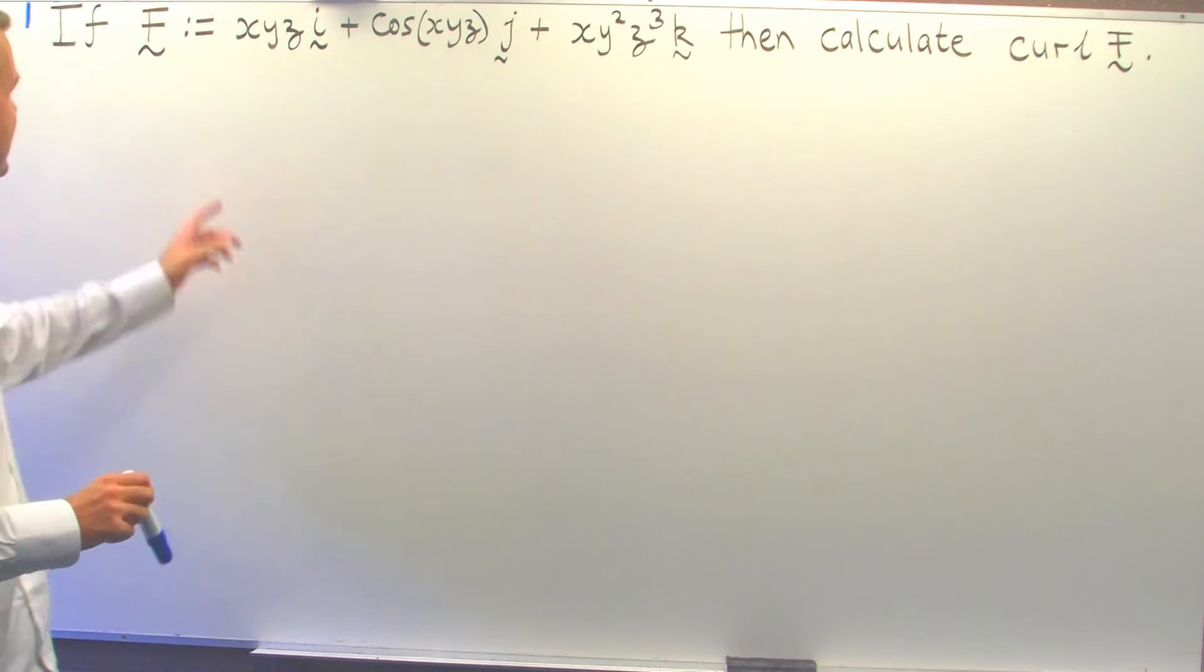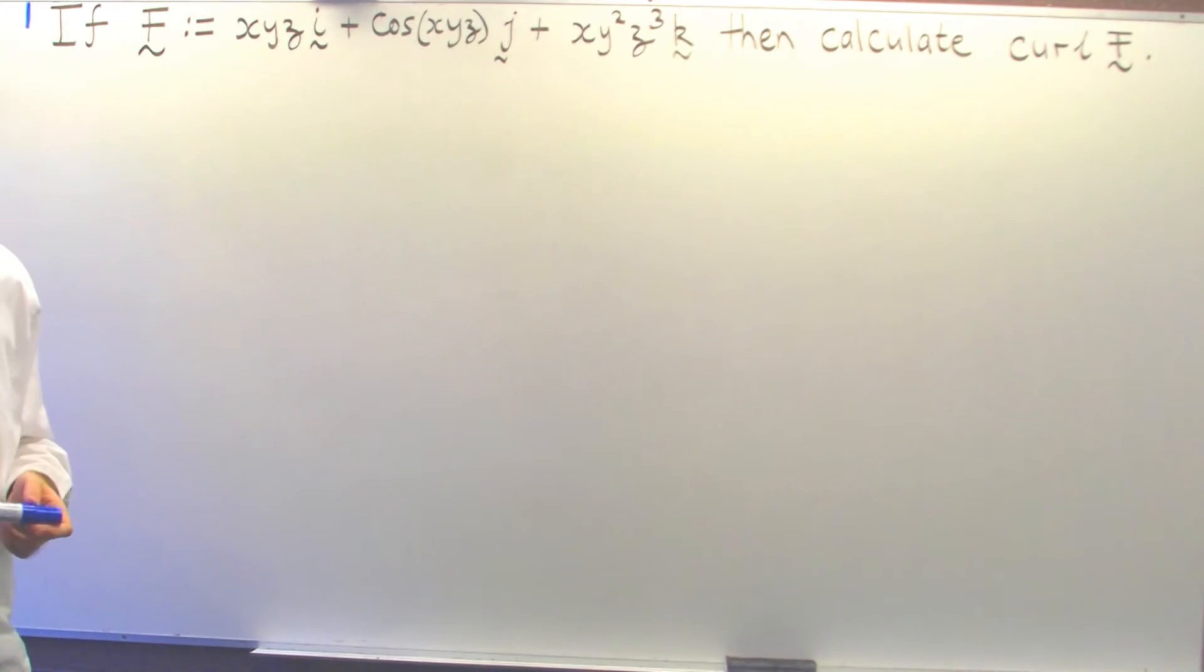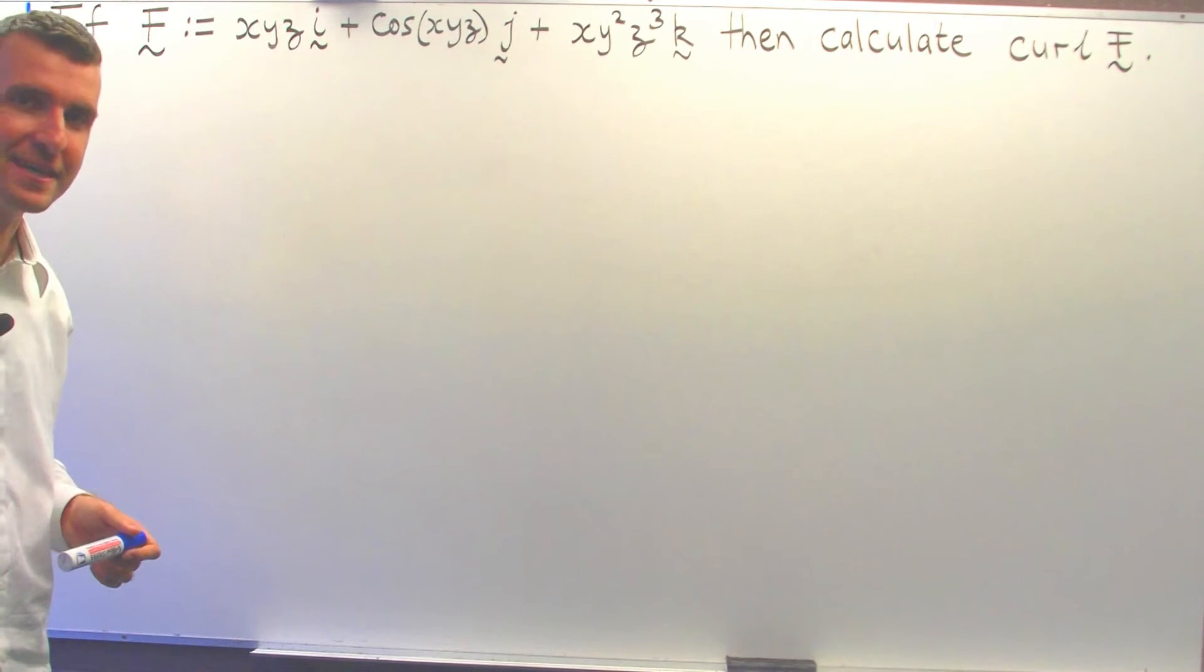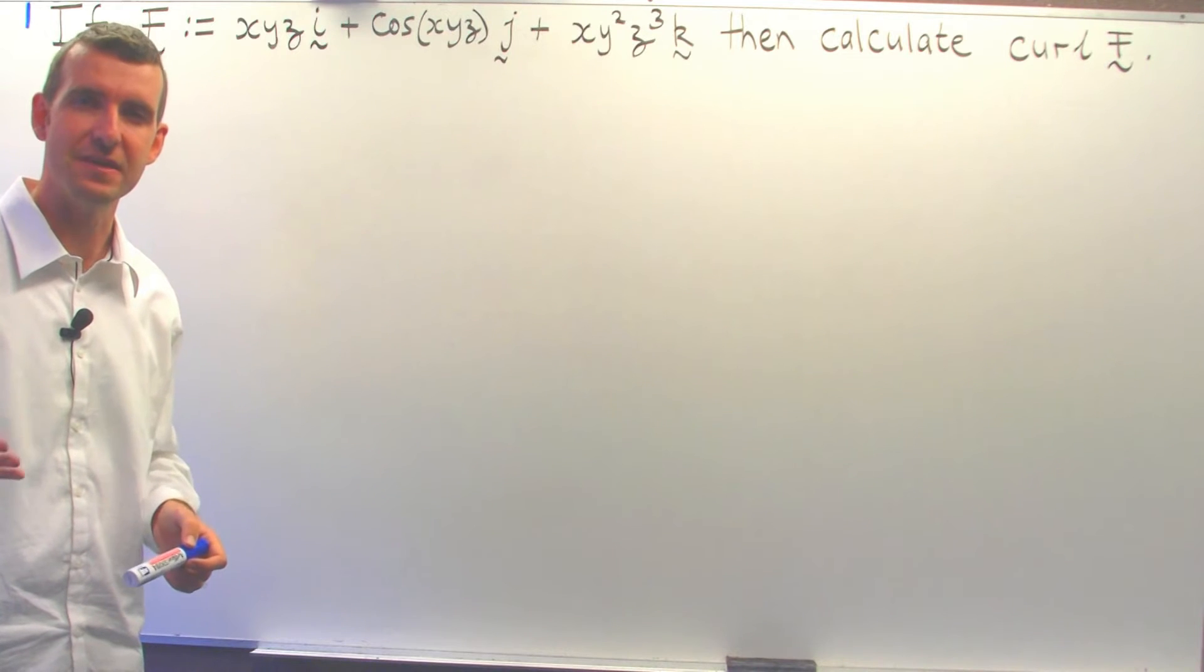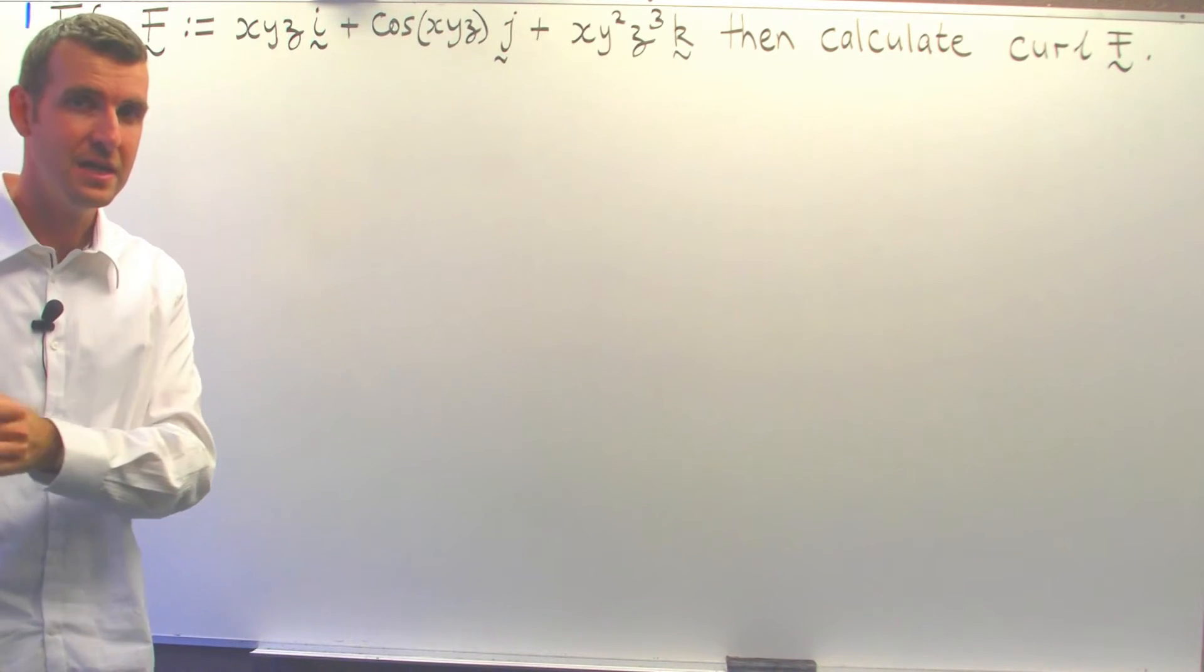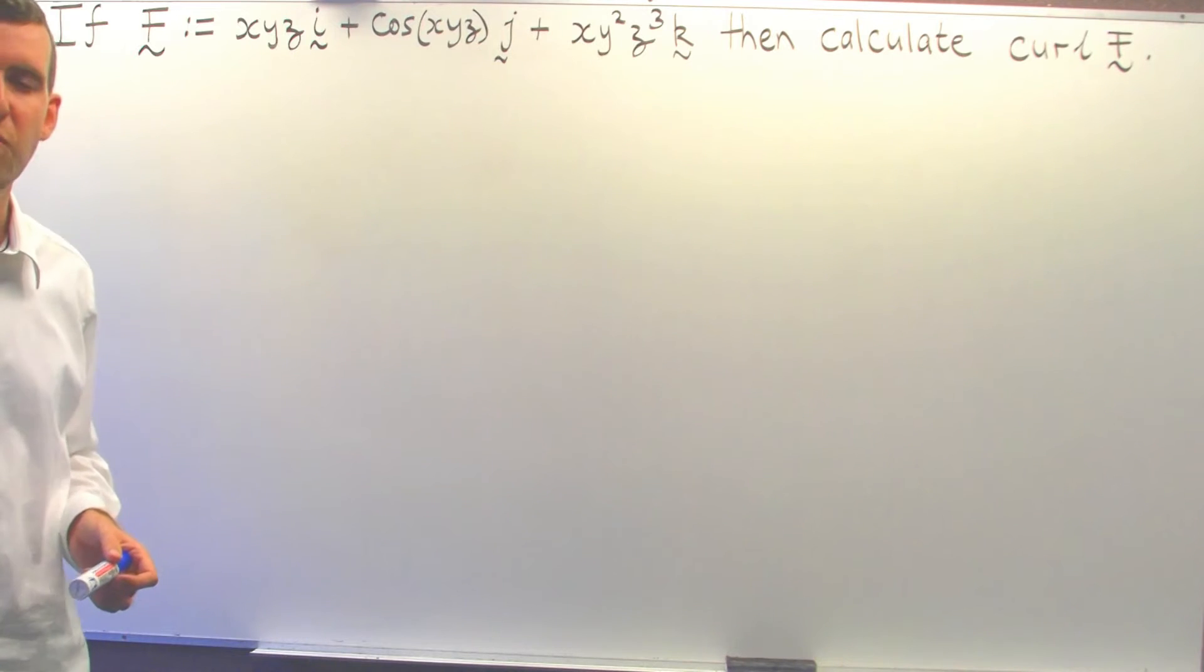Here's our vector field, and we're asked to take the curl of this vector field. Now curl is one of the basic operations in vector calculus. Loosely speaking, we can think of the curl of a vector field evaluated at a point to measure how the field swirls around that point or rotates around that point.